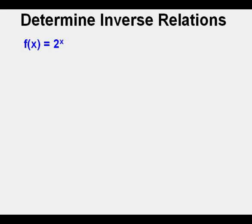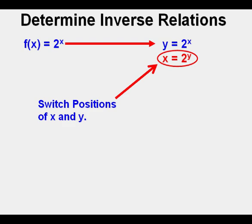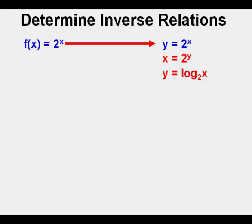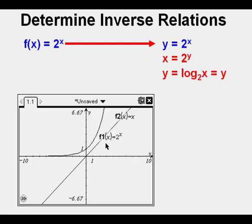Now we'll try the exponential function we graphed earlier: f of x equals 2 to the power of x. We'll rewrite it as y equals 2 to the power of x. Now we'll switch places of x and y as we did in our earlier example. We can rewrite this equation as a logarithm: y equals log base 2 of x. Now we graph f of x equals 2 to the power of x, and then enter f of x equals log base 2 of x. We see the original function and its inverse as reflections about the line y equals x. We can also rewrite the function as f to the negative 1 of x equals log base 2 of x — that's inverse function notation.